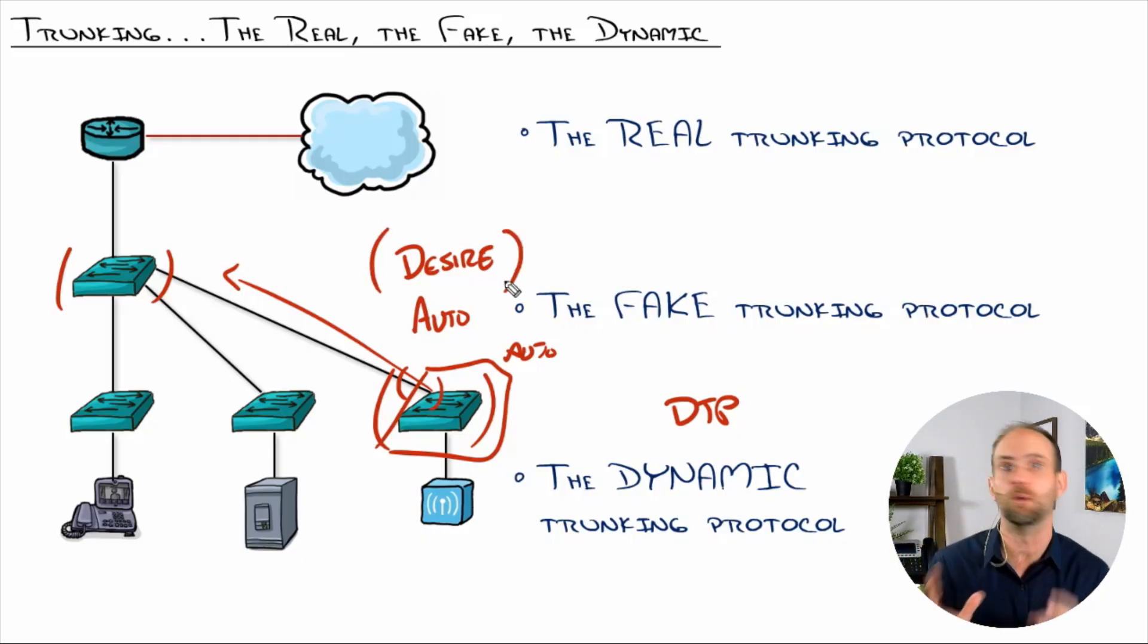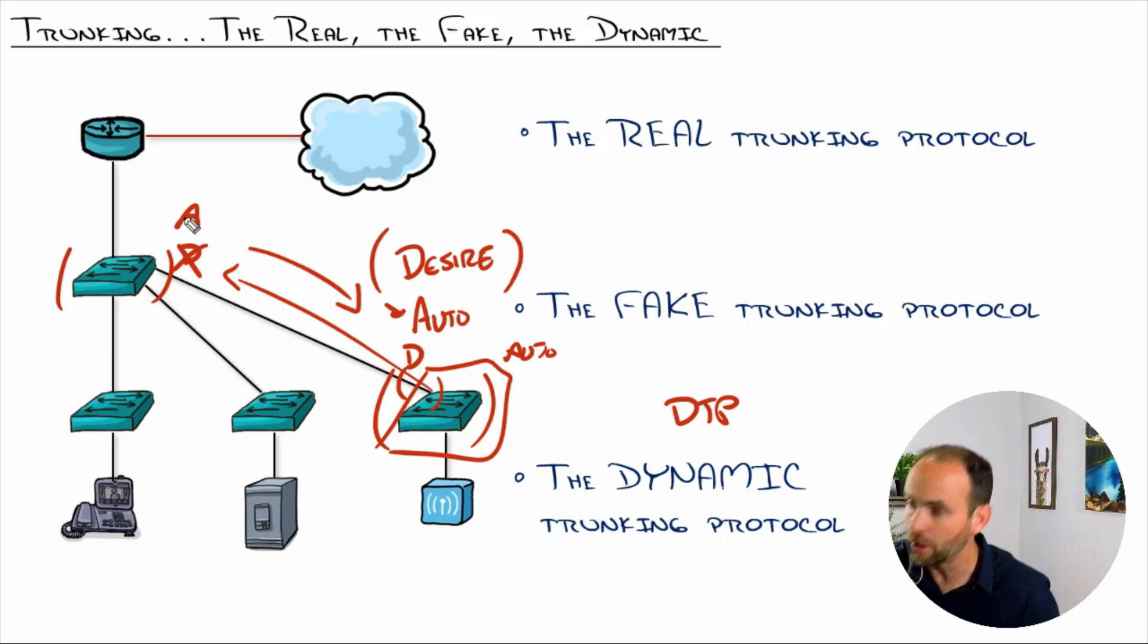Desirable, on the other hand, is like, I want to be a trunk and I'm sending out DTP packets to try and negotiate. And this is why it got so complex. It's like, it's such a simple thing. I just want a trunk, right? But instead, Cisco said, well, we'll have desirable, which will try to be a trunk. And if that hits desirable, then it'll be a trunk. If it's auto, it'll be a trunk. But if I have auto on auto, then it's not going to be a trunk because they'll both just be sitting there staring at each other.